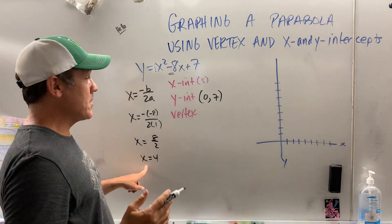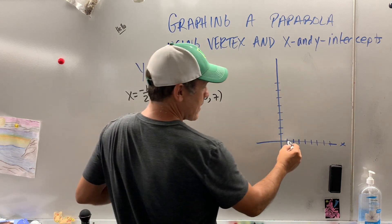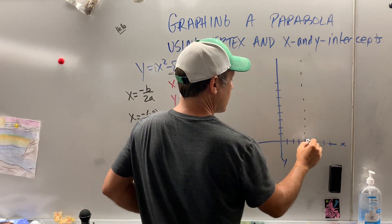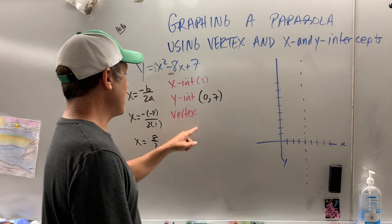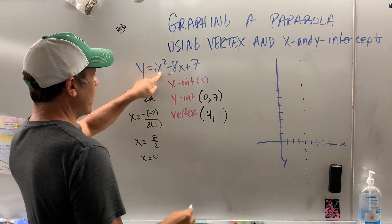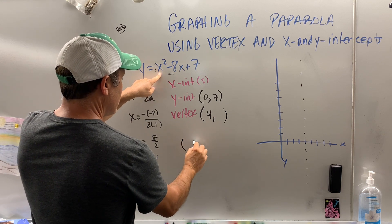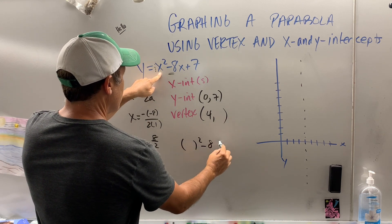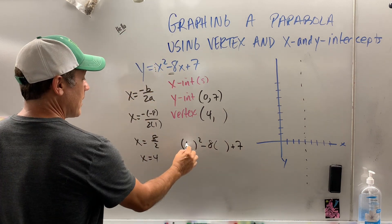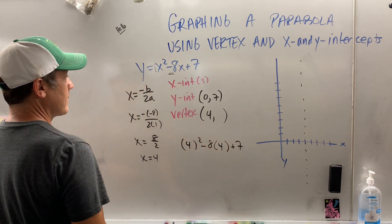So remember, this is the axis of symmetry. Just for kicks, let's put it 1, 2, 3, 4. We know that that's the x value of my vertex. So now I take 4, and I put it into the original function here. So I put a 4 there and a 4 there.